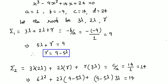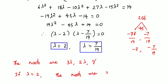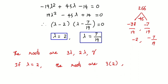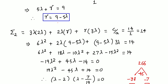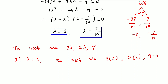The roots are 3λ, 2λ, and γ. Substituting λ = 2: the roots are 3×2 = 6, 2×2 = 4, and γ = 9 - 5(2) = 9 - 10 = -1. So the roots are 6, 4, and -1.